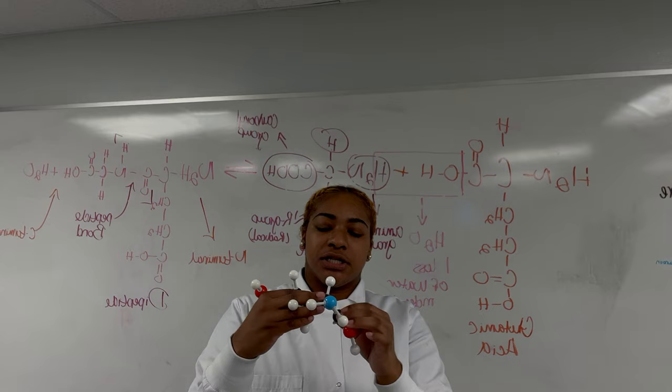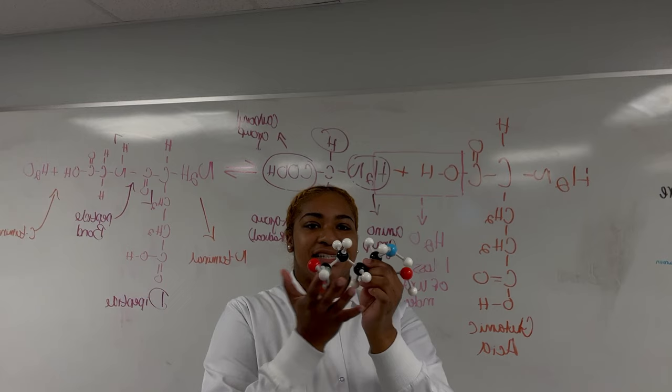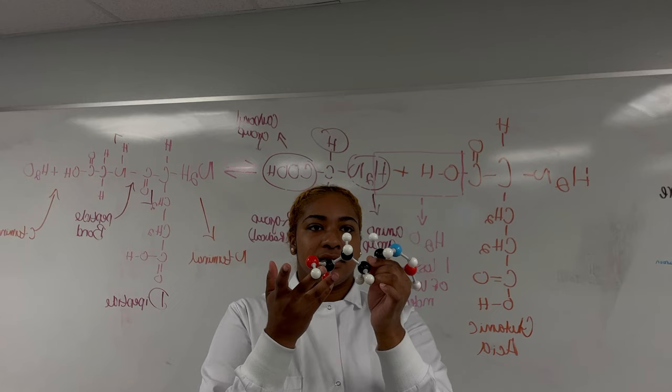In your glutamic acid we have the same basic structure which is your amino group, your carboxyl group, your alpha carbon, this is your hydrogen up here, and this down here is your entire R group.